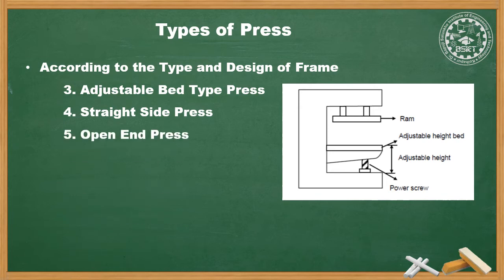Next is open end press. In this, the upper side of the press is open. Next is horning press. It consists of a vertical frame on which a cylindrical post is fitted, which is called a horn. The horn is used for die support and tubular work. These are the types of frame according to the type and design of frame.